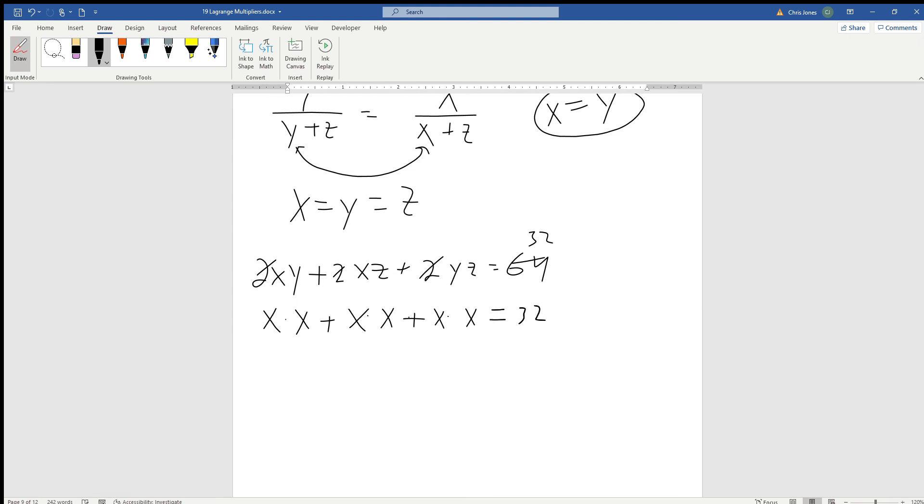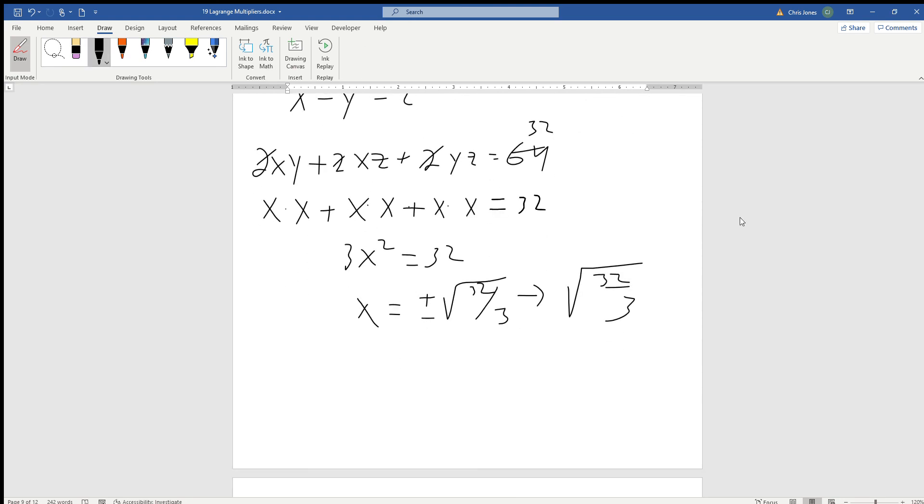And so that means that 3x² equals 32. So x is going to be equal to plus or minus the square root of 32 thirds. And of course we don't care about the negative because we are dealing with the dimensions of some rectangular box. So we're only worried about the square root of 32 thirds. And as we saw already, y is equal to x, which is equal to z, which is equal to the root of 32 thirds.